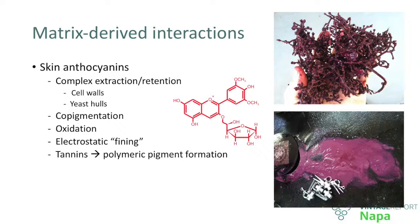This is why extended maceration wines tend to have lower color if you compare that extended maceration wine with a controlled wine. But probably the most important matrix-derived interaction pertaining to tannins has to do with the formation of polymeric pigments, and I want to give you an overview and some insight on what these compounds are and why everyone is talking about them.